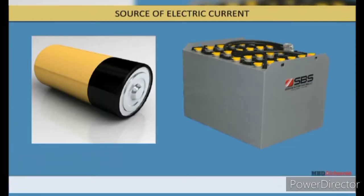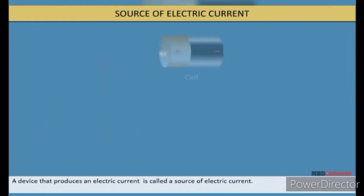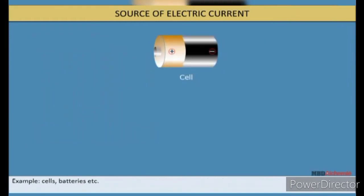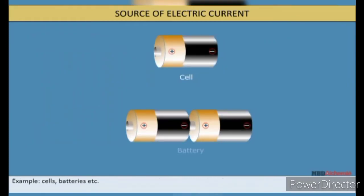Source of electric current: A device that produces an electric current is called a source of electric current. Examples: cells, batteries, etc.